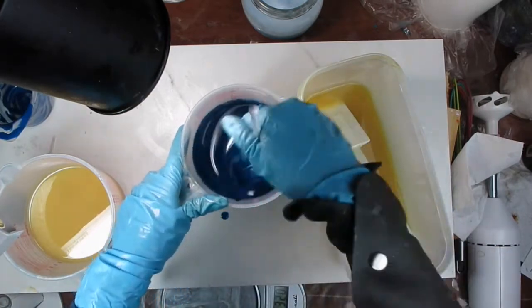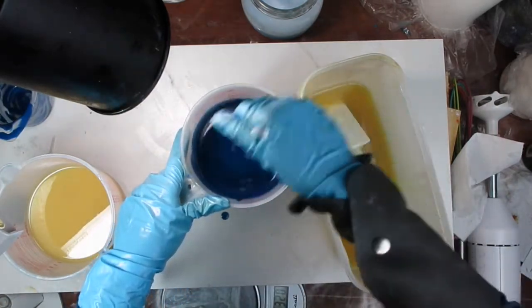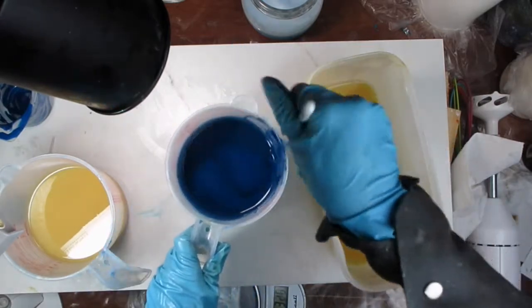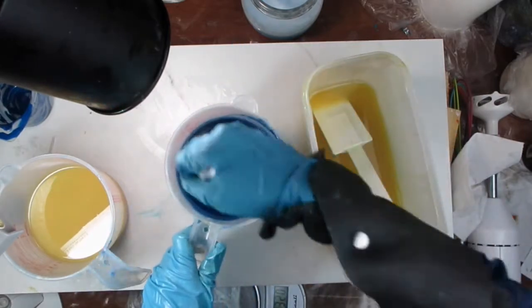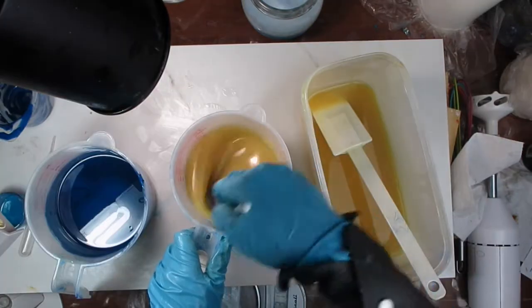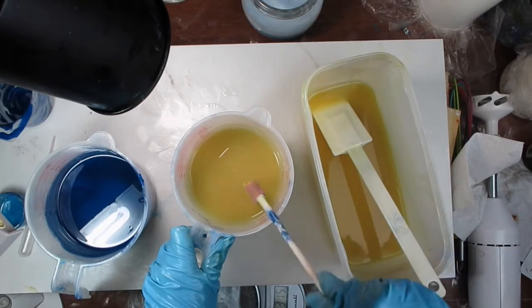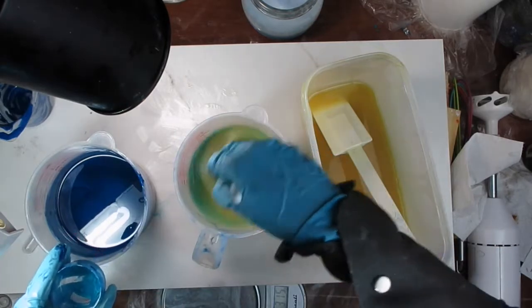After adding the fragrance I divided the soap batter into different containers and then stirred the colorants in. I only use a spatula or spoon to mix them because I wanted to avoid using the stick blender. The stick blender will probably cause them to get thicker faster.